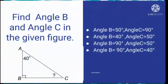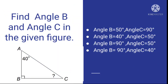Question number 13: Find angle B and angle C in the given figure. In this triangle, only one angle of 40 degrees is given — you have to find angle B and angle C. Your options are: angle B = 50°, angle C = 90°; angle B = 40°, angle C = 50°; angle B = 90°, angle C = 50°; or angle B = 90°, angle C = 40°.